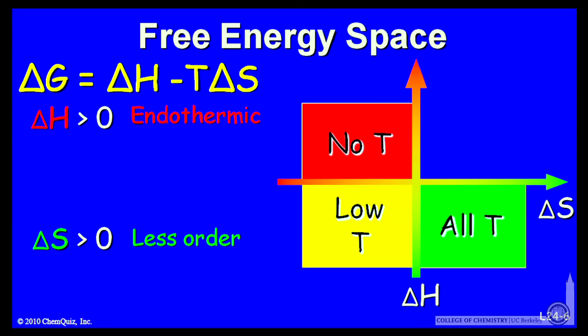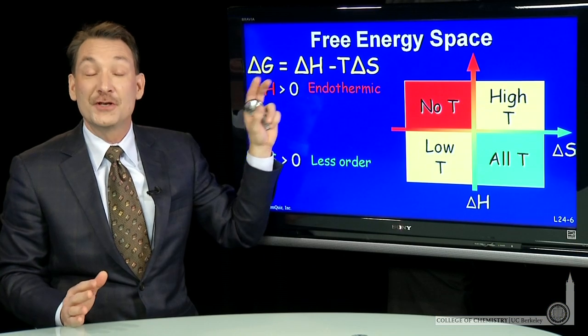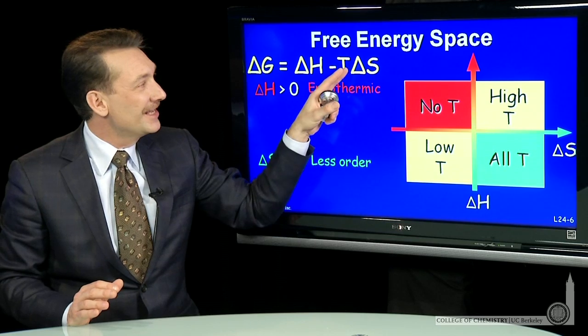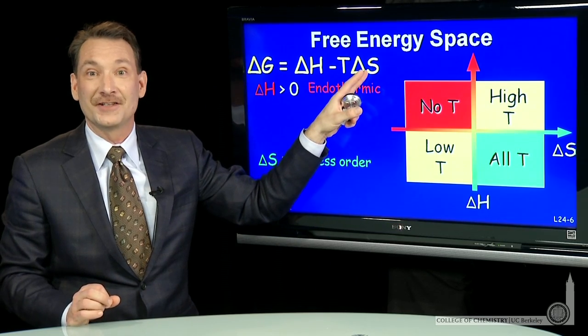Delta S and delta H both positive, an endothermic reaction that goes towards a more dispersed state, will happen for high temperatures. That is, delta H positive, but you can overcome it as long as you have a high enough temperature and a positive delta S.